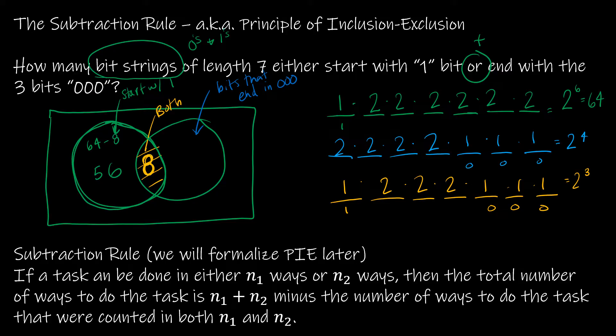So there's 56 that start with 1, but don't end in 000. There's 8 that start with 1 and end in 000. And there's, this guy is 16. 16 minus 8, which gives me 8 that don't start with 1. So that means, of course, they start with 0 and end in 000.